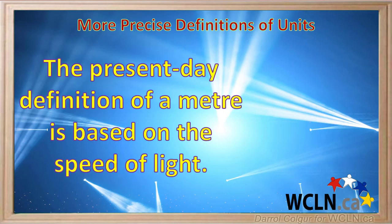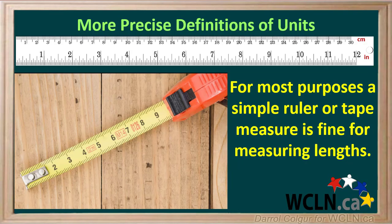The present-day precise definition of a meter is based on the speed of light. However, for most purposes, a simple ruler or tape measure is fine for measuring lengths.